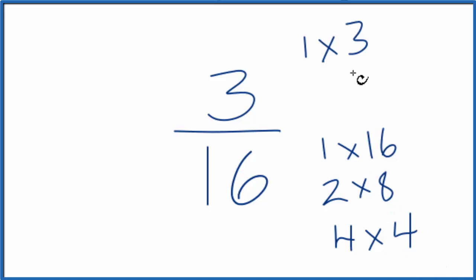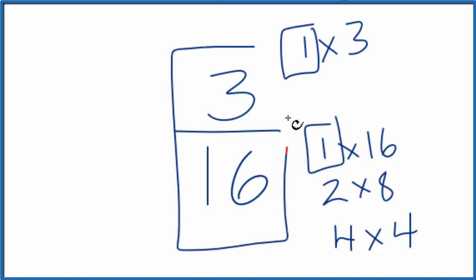So what we want to find is a common multiple for 3 and 16, but really the only thing that's in common is 1. So because of that, 3 sixteenths, we can't simplify this any further. It's in its simplest form. It has the lowest terms here.